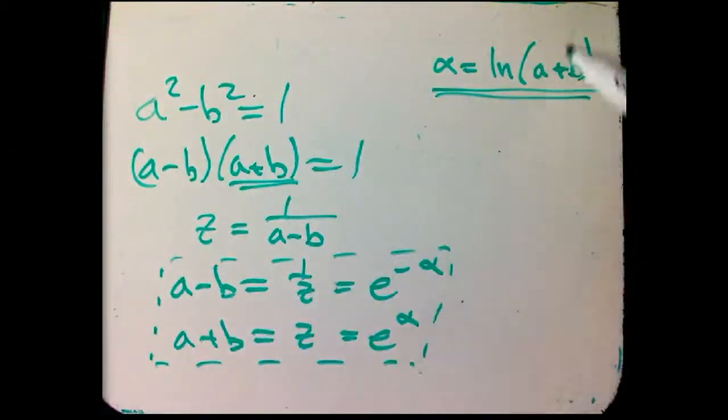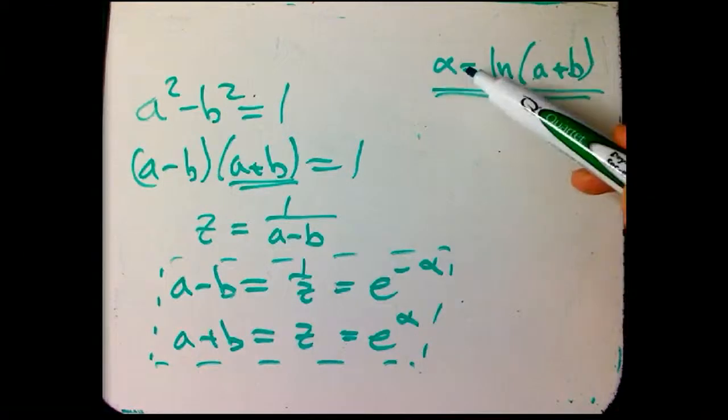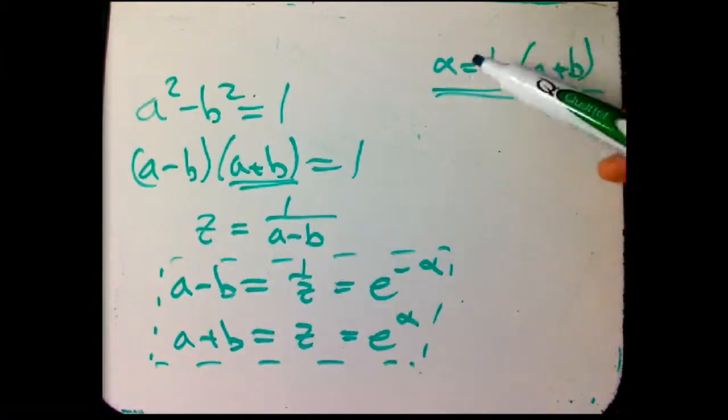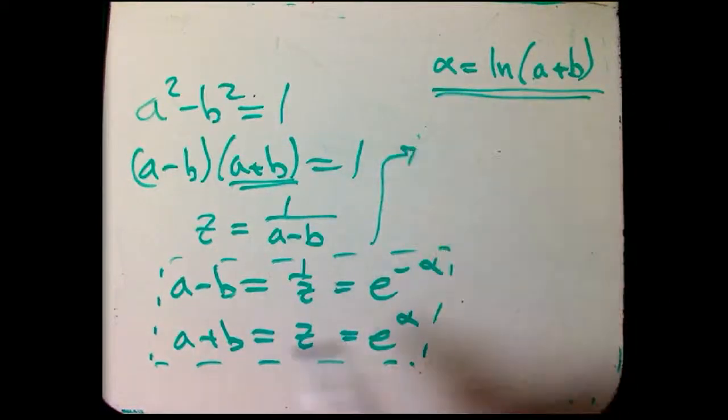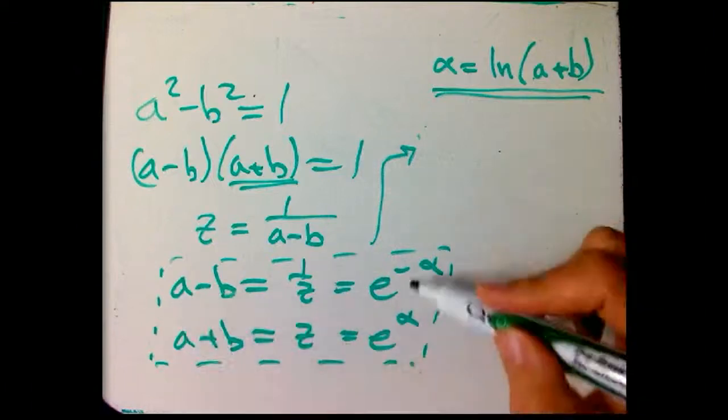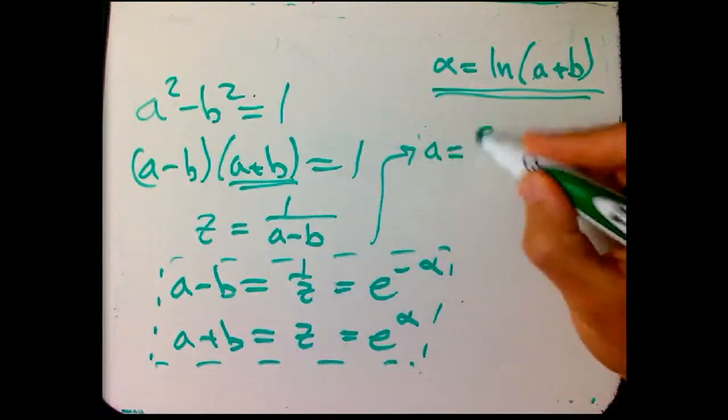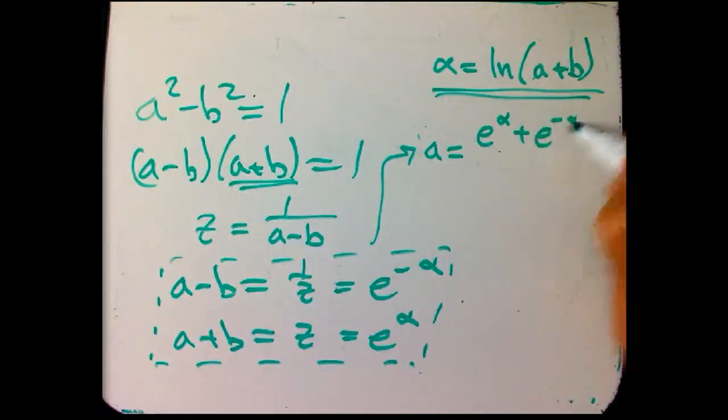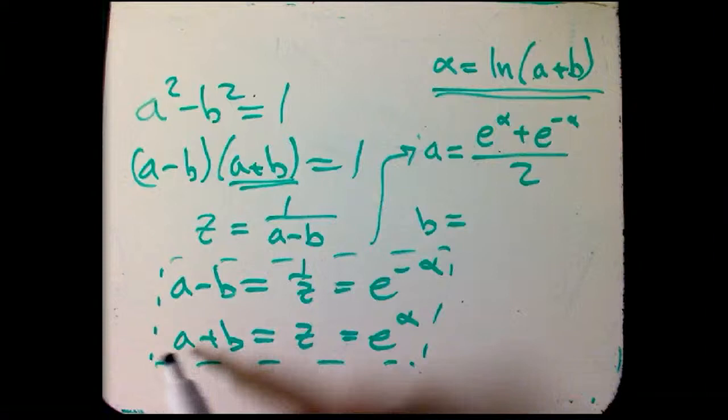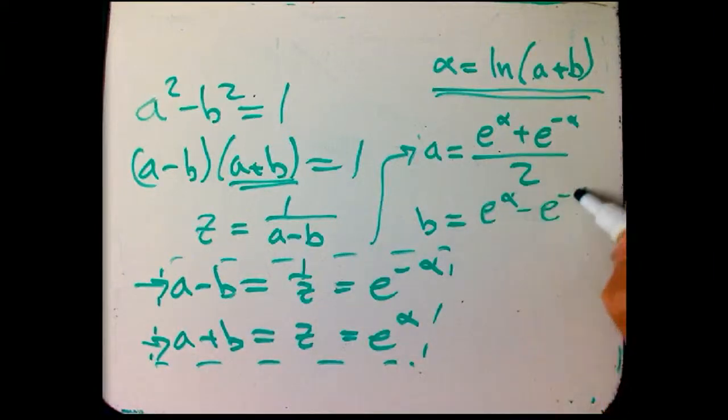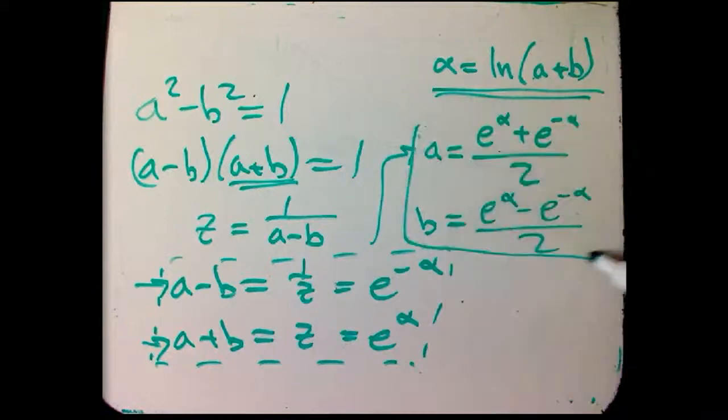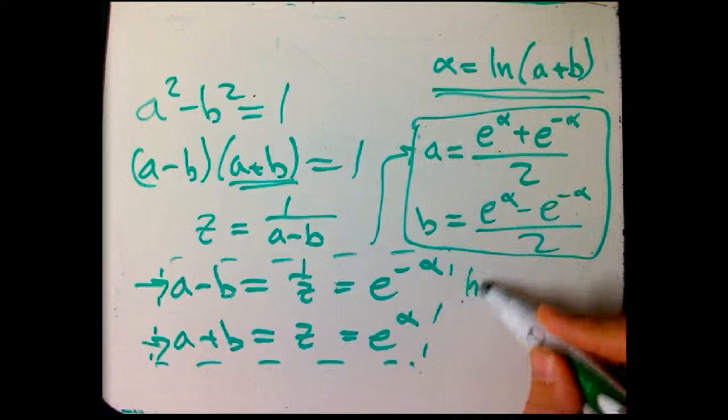What we're basically figuring out is how to invert this. We can just add those equations together. We get 2a is the sum of these guys. Or in other words, a is e to the alpha plus e to the minus alpha over 2. And b, you take this equation minus this equation and divide by 2, e to the alpha minus e to the minus alpha over 2.